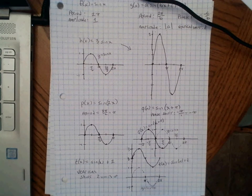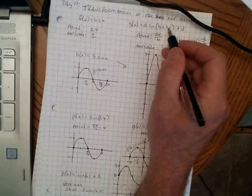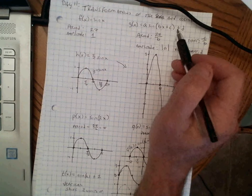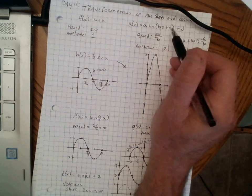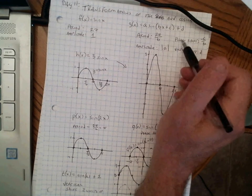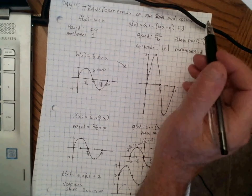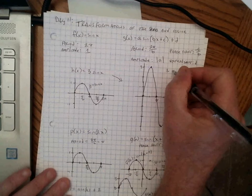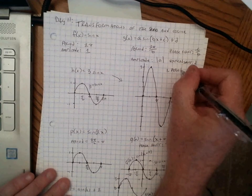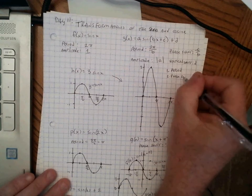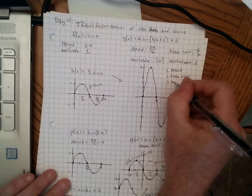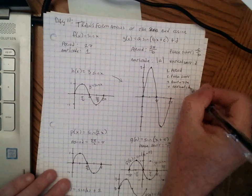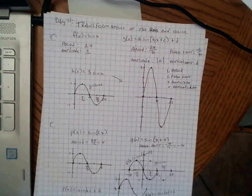That's how you do transformations of sine and cosine. Sometimes they'll have multiple transformations together, and you might have to work from the inside out. Do the horizontal compression first — the period — then the phase shift, then the amplitude, and finally the vertical shift. You probably won't see any that have all of those combined right now.